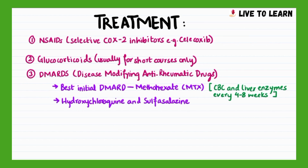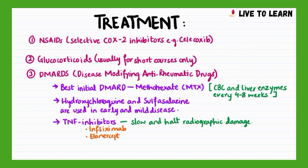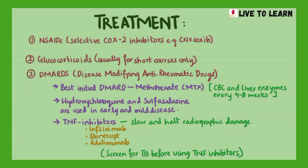Hydroxychloroquine and sulfasalazine are used in early and mild disease. TNF inhibitors relieve the signs and symptoms of rheumatoid arthritis and slow or halt radiographic damage. There are three TNF inhibitors approved for treating rheumatoid arthritis: infliximab, etanercept, and adalimumab. It is important to screen for TB before using TNF inhibitors.